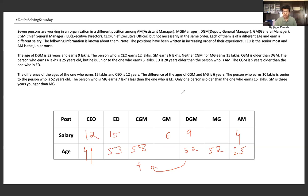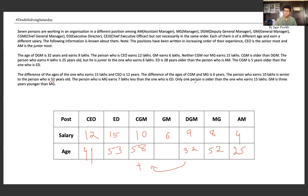The person who earns 10 lakhs is senior to the one who is 52 years old. Since 52 years old is MG, that senior person comes out as 64 years old, and 10 lakhs is placed accordingly. MG earns 7 lakhs, which means ED earns 8 lakhs. Only one person is older than the one who earns 15 lakhs, so ED is assigned 15 lakhs. GM is 3 years younger than MG, so GM is 49. And that completes the first sum.